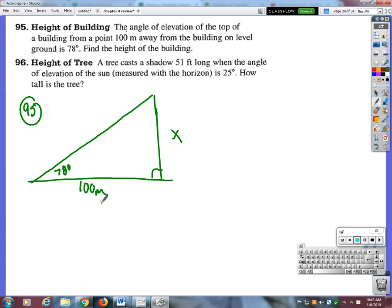Tangent. So the tangent of 78 degrees is equal to the opposite side, which in this case is x. Yep. Divided by the adjacent, which is 100. So to find the height, we have to go 100 times the tangent of 78 degrees, which I don't know what that works out to be, but you guys can figure it out. All right. Anything else? Okay. Why don't you guys hang on to those in case you want to use them on the test?